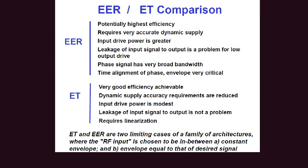Another important difference between EER and ET is that in ET the RF amplifier is a linear amplifier, while in EER the RF amplifier is a switching mode power amplifier. The word 'restoration' in EER means that in the end the signal is reconstructed from the amplitude and the phase-modulated signal.